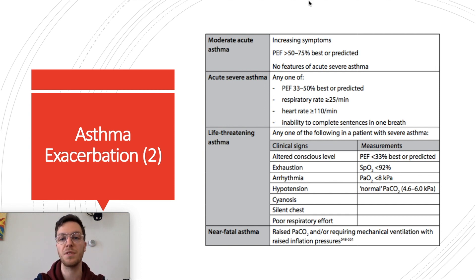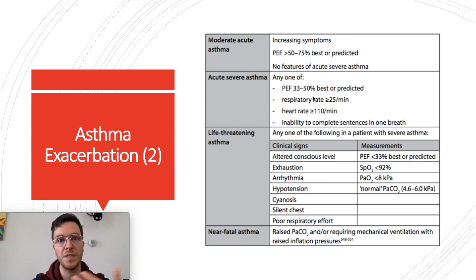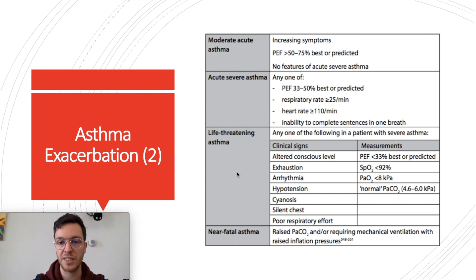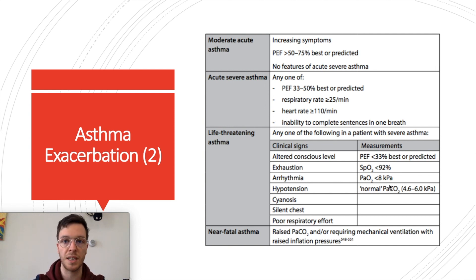In moderate acute asthma, PEF is 50–75% of predicted best with no features of acute severe asthma. In acute severe asthma, PEF is 33–50% of predicted, respiratory rate is over 25 per minute, heart rate is over 110 per minute, or the patient is unable to complete sentences in one breath. In life-threatening asthma, clinical signs include altered consciousness, exhaustion, arrhythmia, hypotension, cyanosis, a silent chest, or poor respiratory effort.